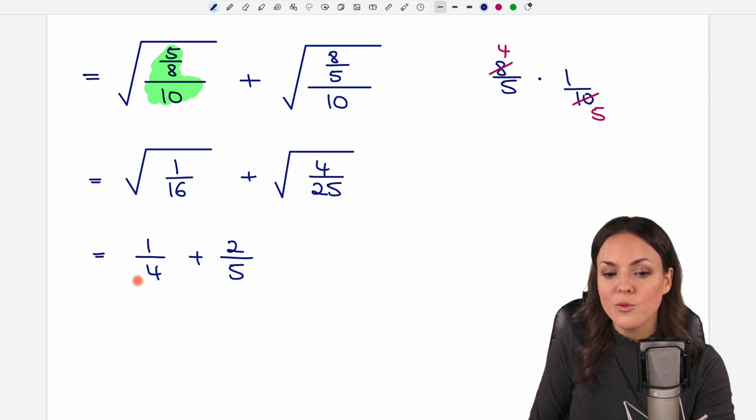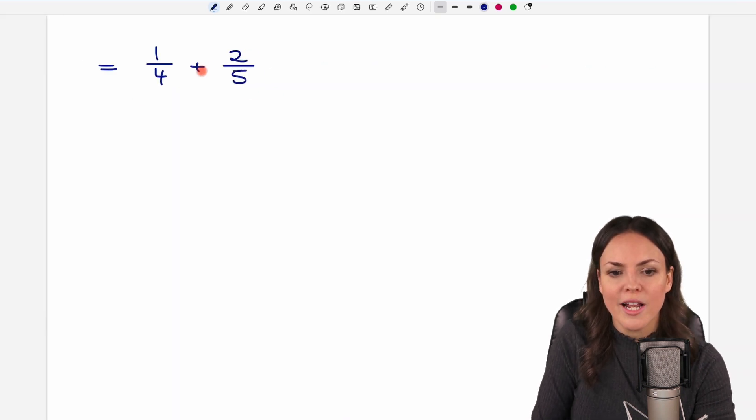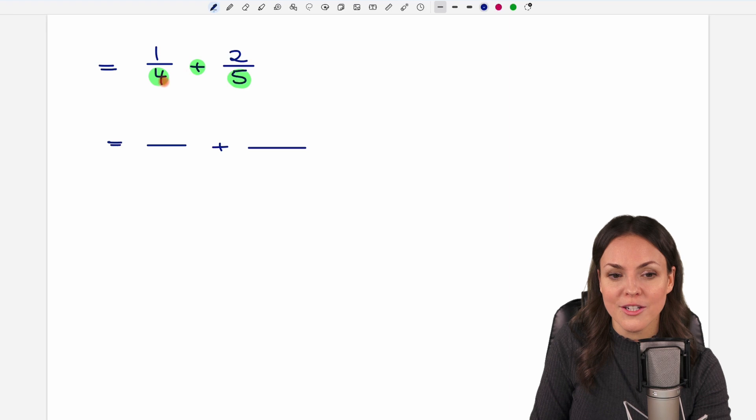Now we have two simple fractions and we just want to add these fractions. But we can only do that if the denominators are the same. They are not yet, so we have to take care of this first. When your numbers are so small you can always find a common denominator by just multiplying these two denominators. So 4 times 5 equals 20. Then you always get a common denominator.